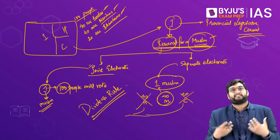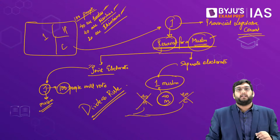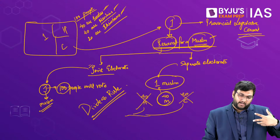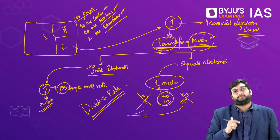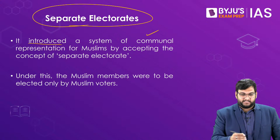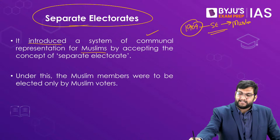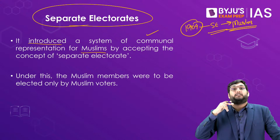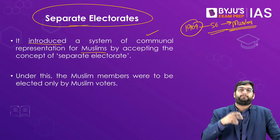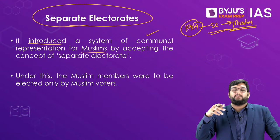Separate electorate is a dangerous concept. Our Indian Constitution still embodies reserved seats, but with joint electorate — everybody elects that person, nobody is disenfranchised. Separate electorate is dangerous because only that community votes for that seat. In 1909, the separate electorate concept was extended only to Muslims. Later, through the Montague-Chelmsford reforms of 1919, it was extended to Sikhs, Anglo-Indians, and Christians. By 1932, it was extended to depressed classes, but the Poona Pact converted that to reserved seats instead. By 1935, it was extended further to women and workers.